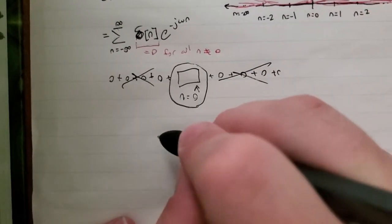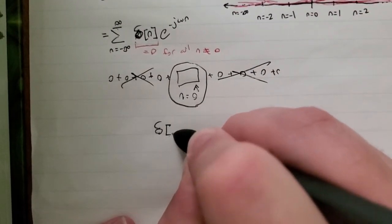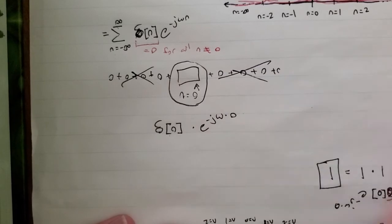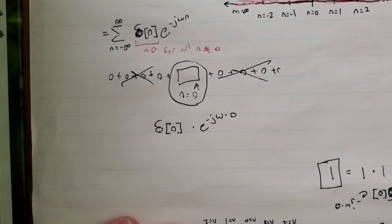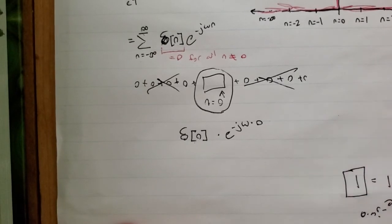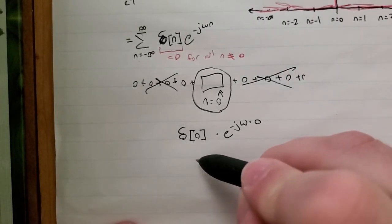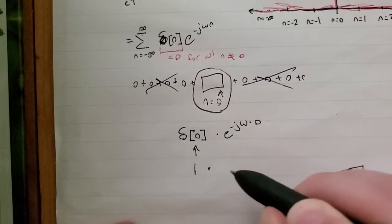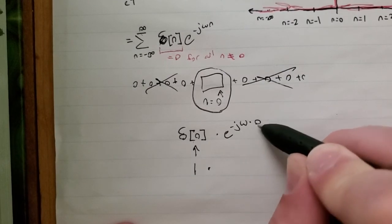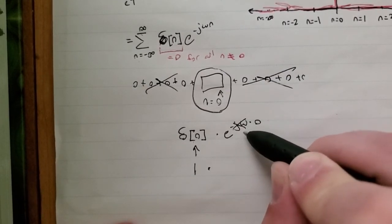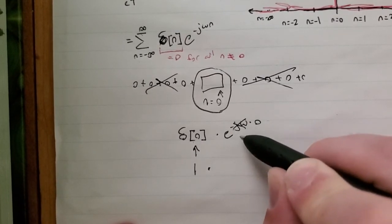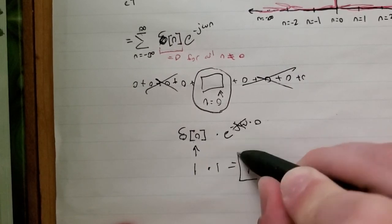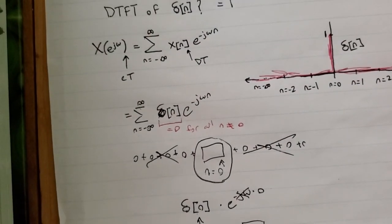So if we do that, what we have is delta[0] times e to the negative j omega times zero. If we have the delta function of zero, that by definition is just one. And then times anything to the zero power — because this is just going to be zero — so we basically just have e to the zero, and that is one also. One times one is equal to one, and that's our answer. Thanks for watching.